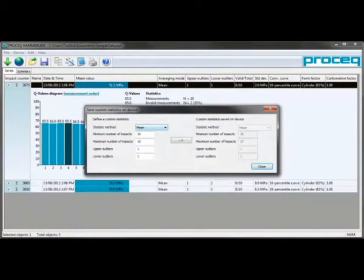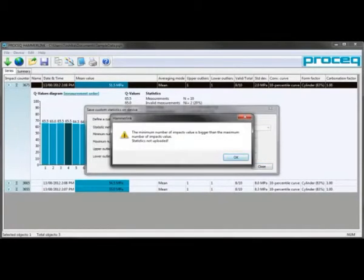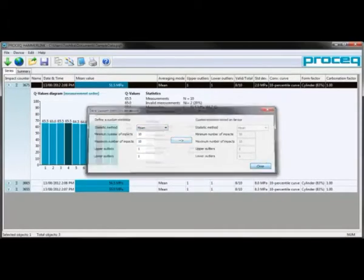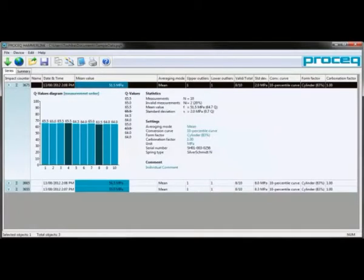We can also load custom statistics into our hammer. The 10 minimum and 10 maximum, with a drop of an upper outlier and a lower outlier, is a standard method, but you can use any method you choose. I'm going to set this back to 10, 10, 1, 1. We also have the option to select between mean and median.